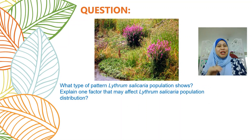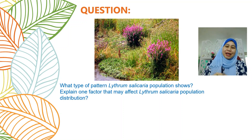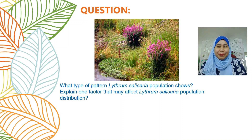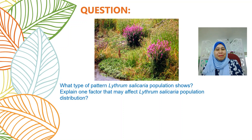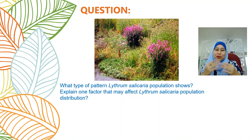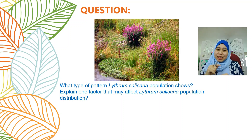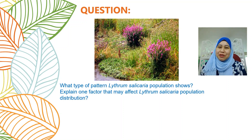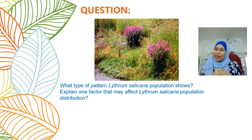Now let's try one question on this topic. Look at the picture — it shows a population of Lythrum salicaria. The question is: what type of distribution pattern does the Lythrum salicaria population show? Explain one factor that may affect its population distribution. Can you think of an answer?